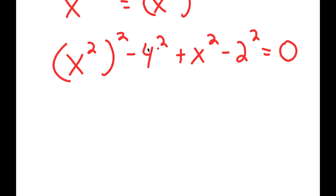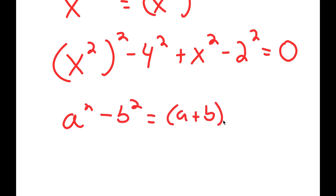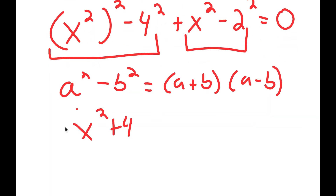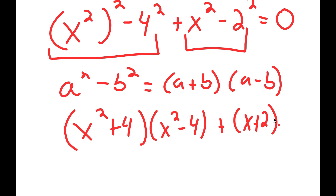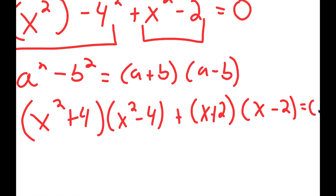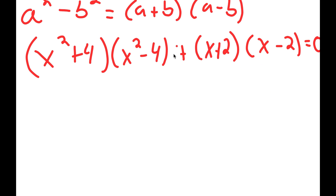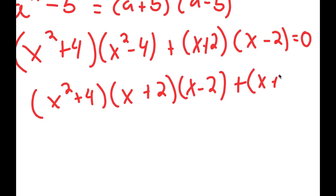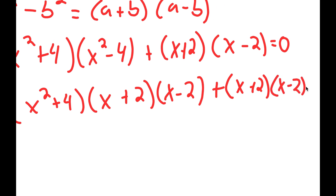Now, notice how everything is in the power of 2, and if I have something in the form a squared minus b squared, this is equal to a plus b times a minus b. So we're going to use this property on these two groups. So I first get x squared plus 4 times x squared minus 4, plus x plus 2 times x minus 2, is equal to 0.